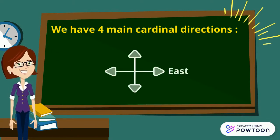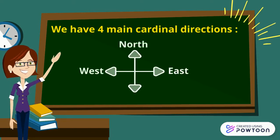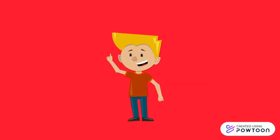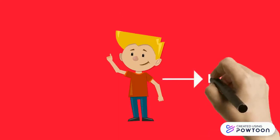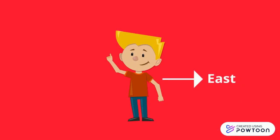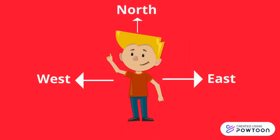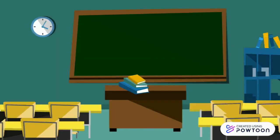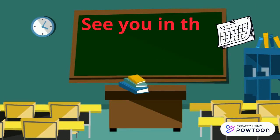We have east, west, north, and south. Now imagine yourself standing like this: your left arm is east, your right one is west, your head is north, and your feet are south. See you in the next lesson, goodbye!